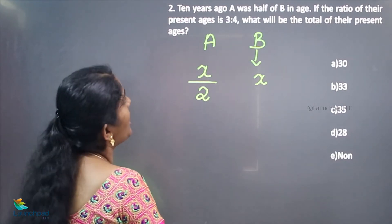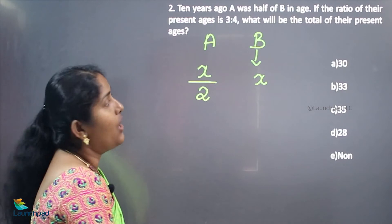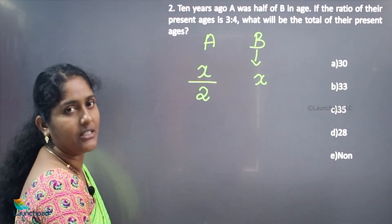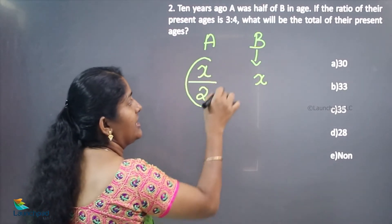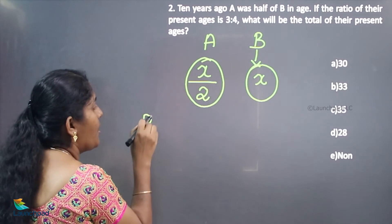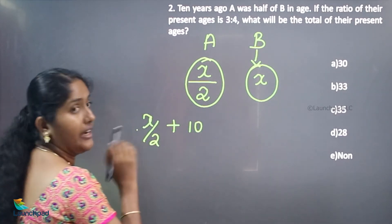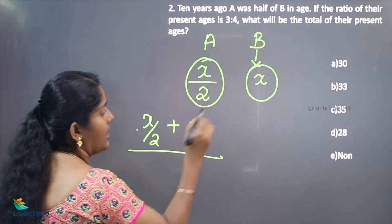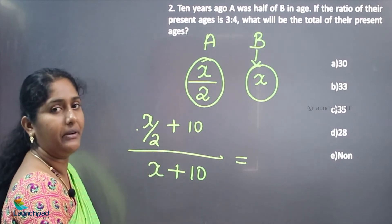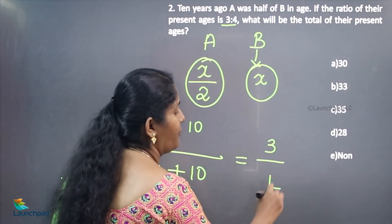Now, if the ratio of their present ages is 3 to 4, what will be the total of their present ages? This represents 10 years ago. At present, plus 10 years will be added to both A and B.